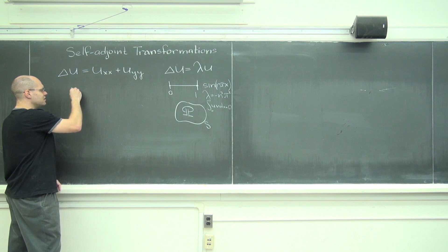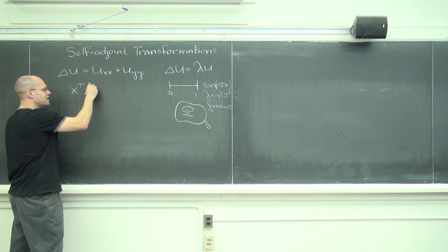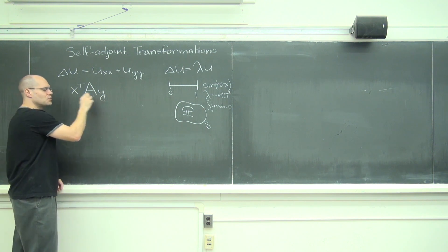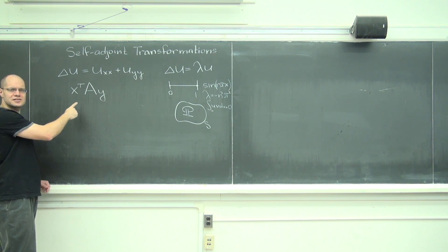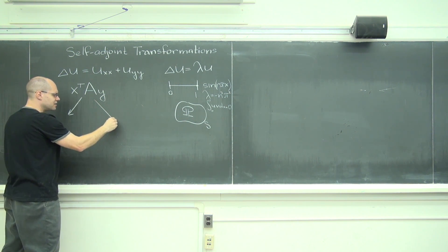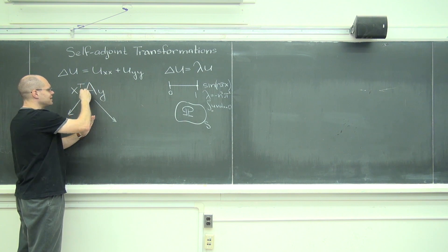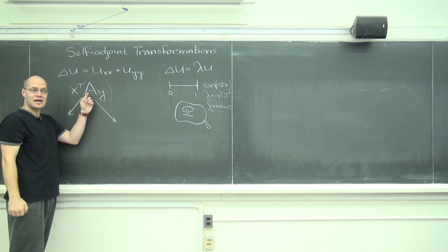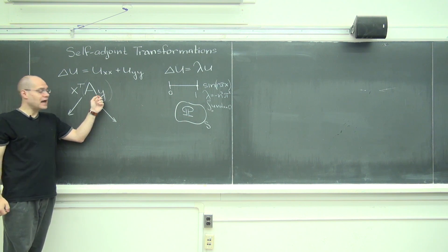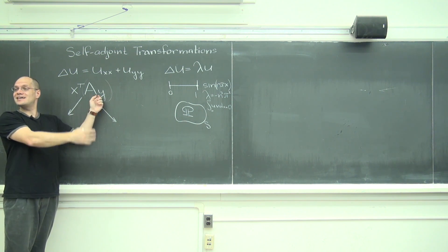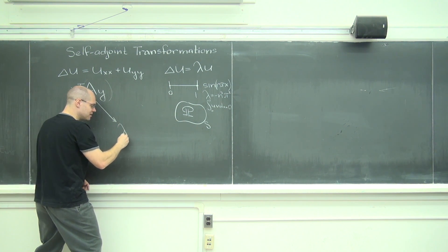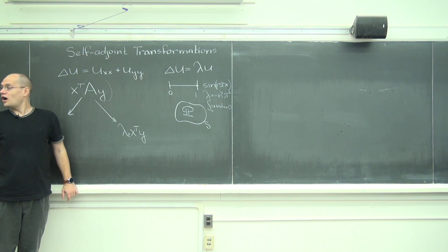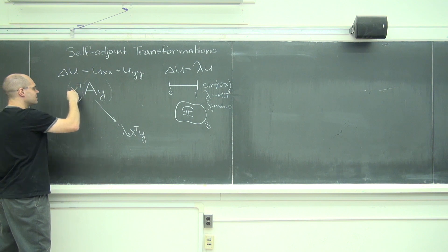Essentially, if we said let's look at the combination x transpose A y, where x and y are the eigenvectors corresponding to the different eigenvalues, do you remember that? And it essentially said we can look at this product two different ways. One way to look at it, let's start with this one first, is to group it like this and to look at A y.